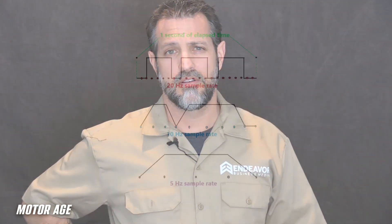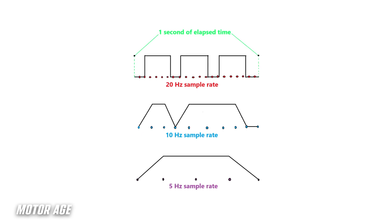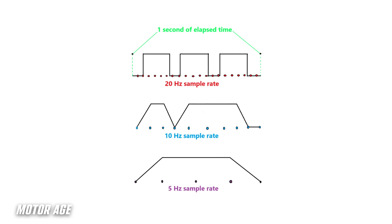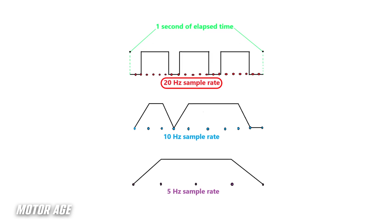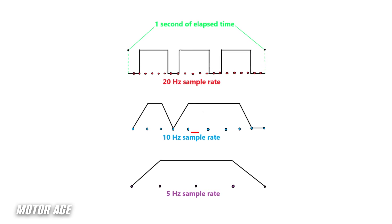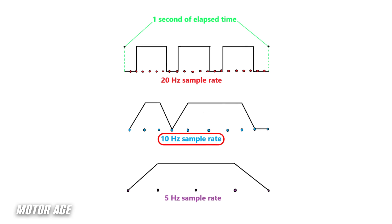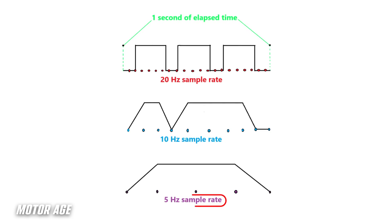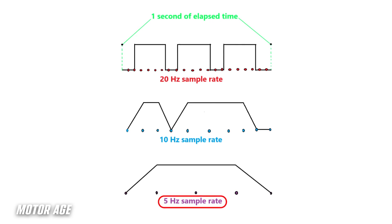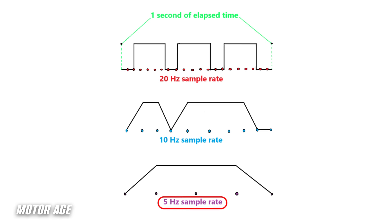Leveraging the power of the lab scope allows us to make almost real-time captures stored in a buffer over time. However, the limitation of sample rate means if we have insufficient sample rate for the sample being captured, it will not draw an accurate graphical representation of what's happening in the circuit. This digital square wave is a common signal seen among many automotive manufacturers' platforms. With a 20 hertz sample rate, we can accurately capture the digital square wave. Cutting that to 10 hertz — 10 samples per second — does not allow enough samples to accurately represent the signal. Cutting it in half again severely limits the scope's capability and does not provide an accurate representation of what's truly happening in the circuit.